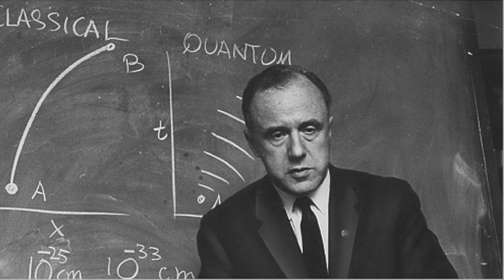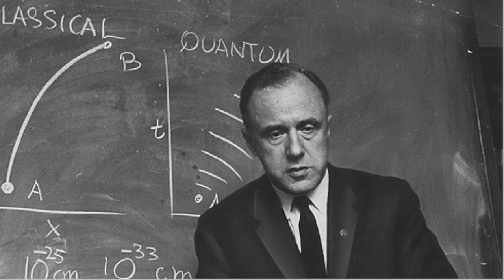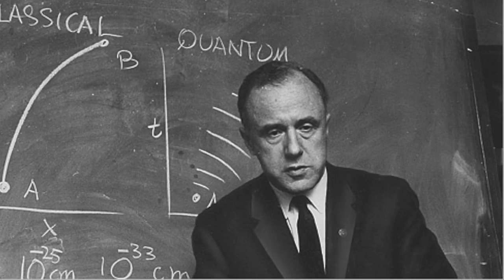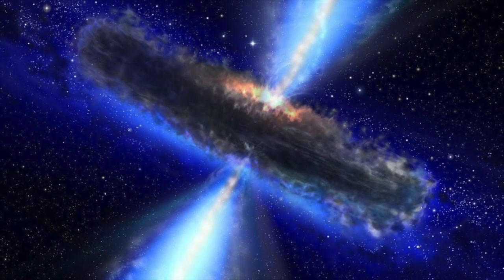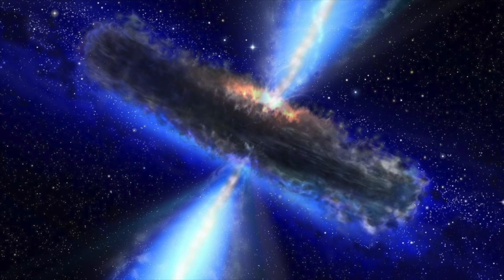Black holes were first predicted by Albert Einstein with his general theory of relativity, but he did not actually call them black holes. The term black hole was coined by an American astronomer named John Wheeler in 1967, and the first black hole was discovered a few years later in 1971.